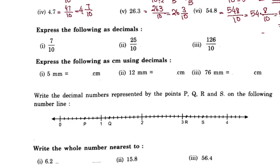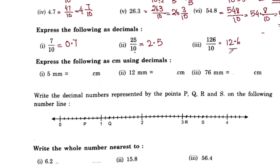Express the following as decimals. 7 by 10 is equal to 0.7. 1.0, 2.5, and 3.0. Since the division is equal, multiplication moves the decimal point left and right.